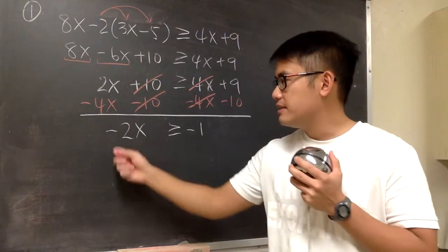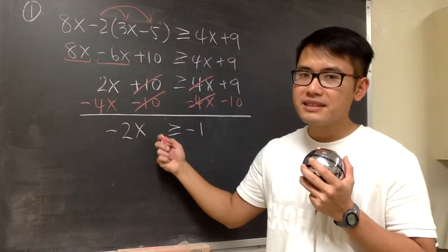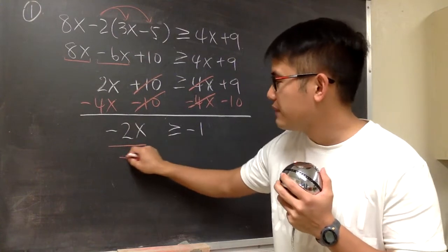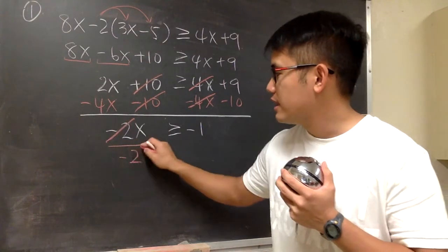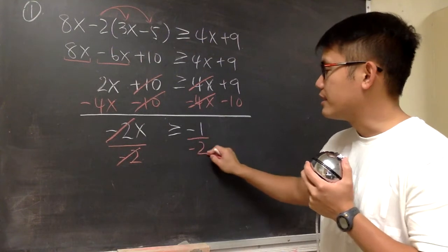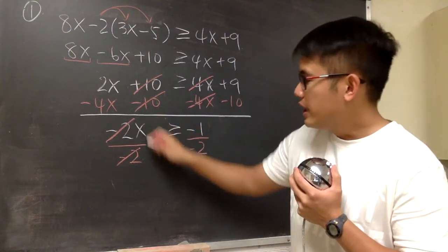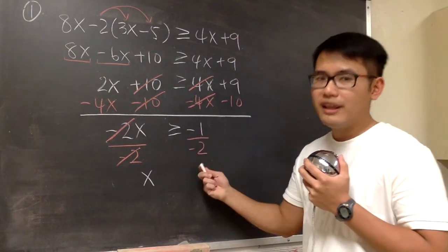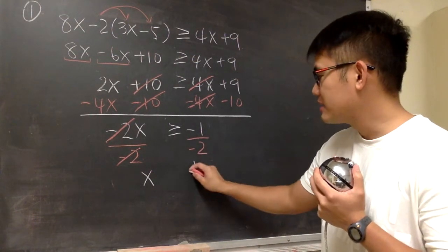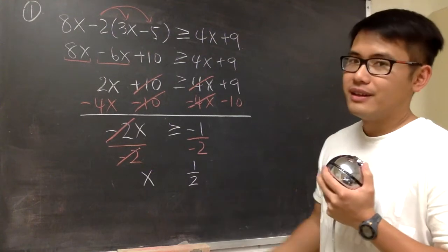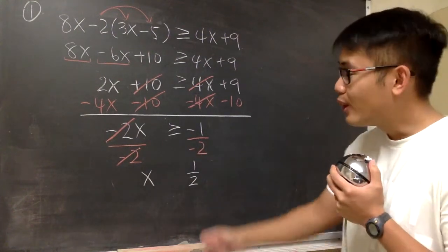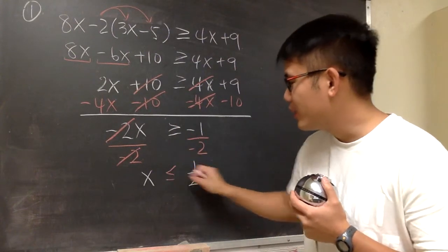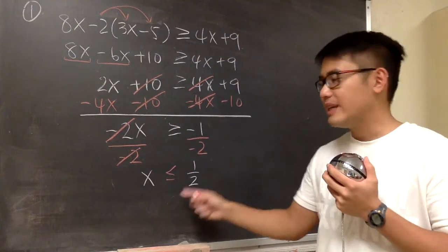So we get negative 2x greater than or equal to 9 minus 10, which is negative 1. Since this is negative 2 times x, we divide both sides by negative 2. When dividing by a negative number, we flip the symbol. Negative 1 over negative 2 is positive one half, so x is less than or equal to one half.